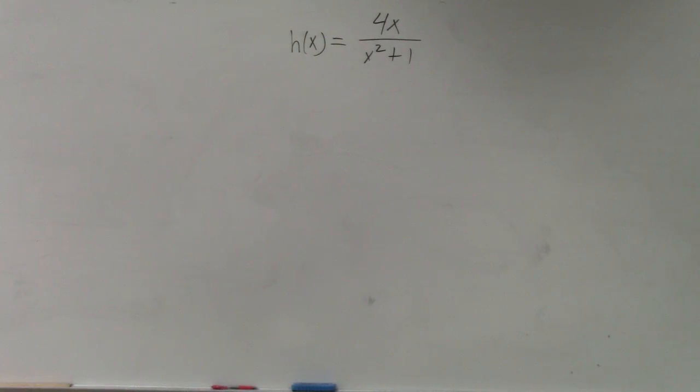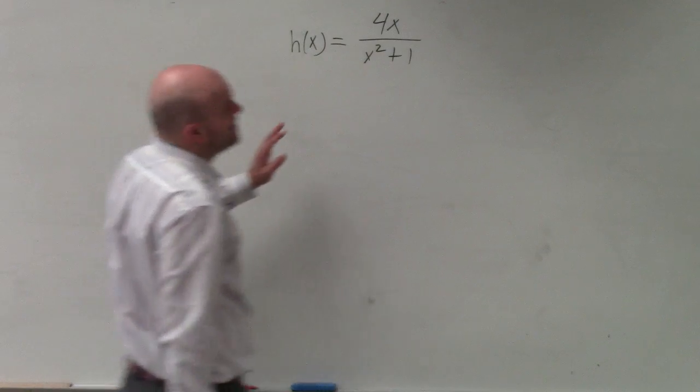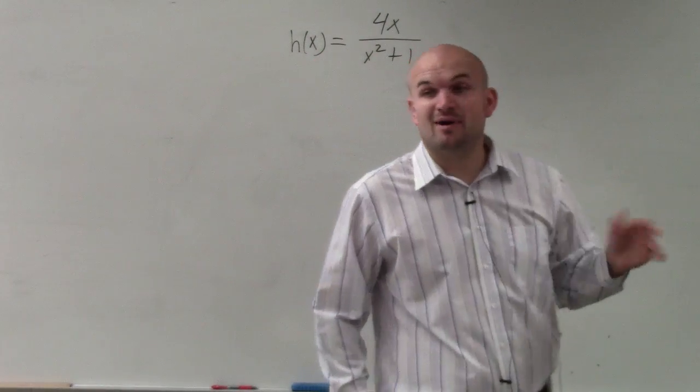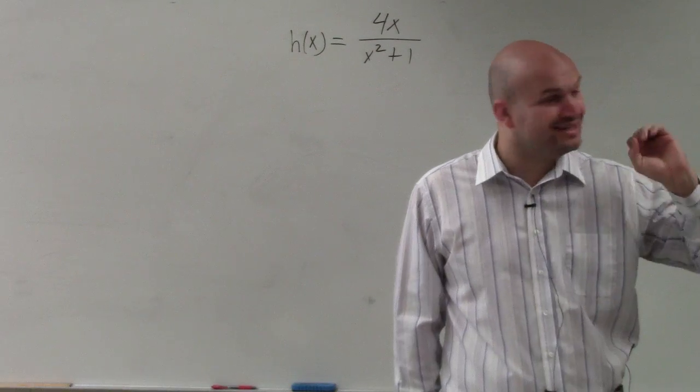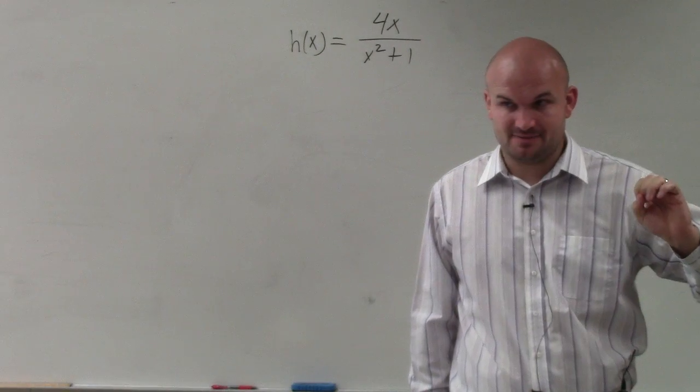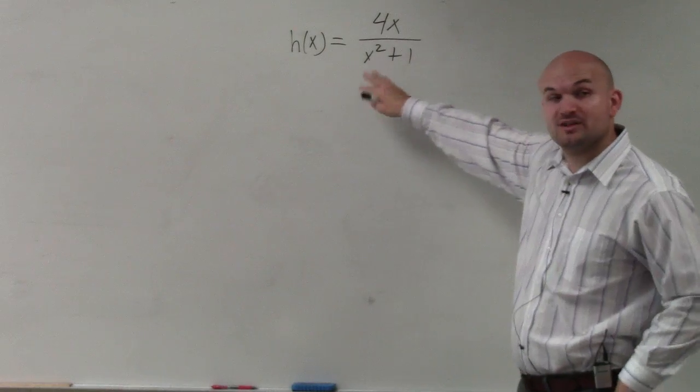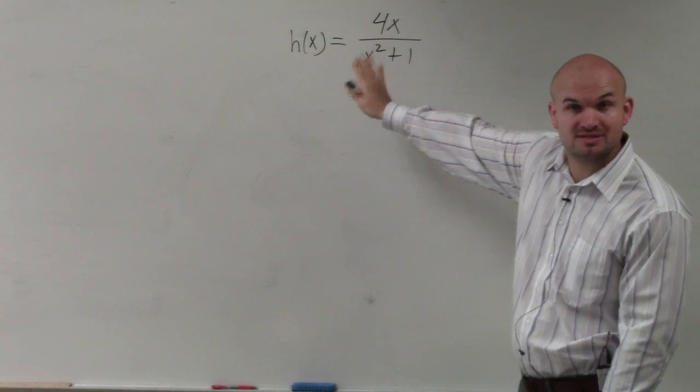All right. If you take a look at this problem, to identify vertical asymptotes—remember, vertical asymptotes are non-removable discontinuities. In a rational function, they're where the denominator equals zero.